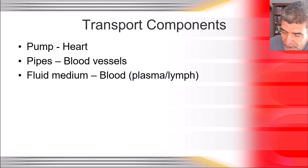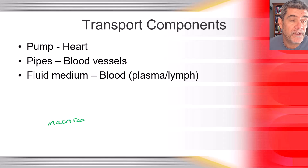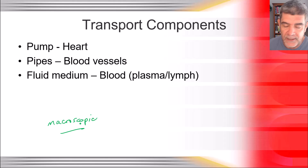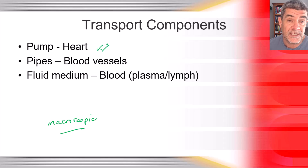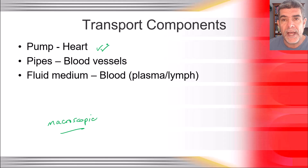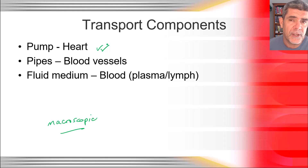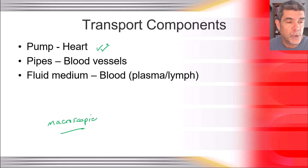We're going to be looking at transport components at the macroscopic level. The three key components of our cardiovascular system are: the pump that drives all of the fluid around, which is the heart. Hopefully you'll have the opportunity to dissect a heart, or at least look at a model of one, to understand the different components and some of the differences between human hearts and the hearts of other animals.